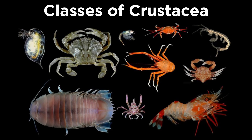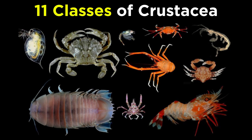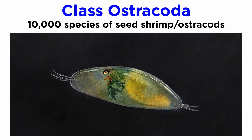Depending on how one classifies crustaceans, there are between 10 and 12 classes. We will be going over 11 classes over the next two tutorials. Let's get started with class Ostracoda, which includes more than 10,000 described species, commonly referred to as seed shrimp, or simply ostracods.